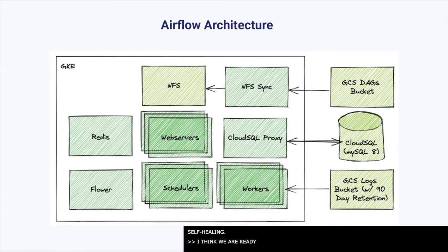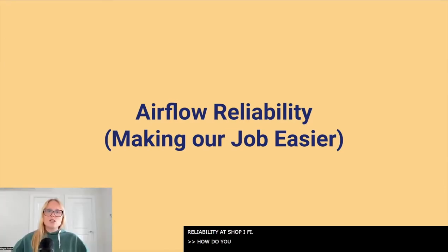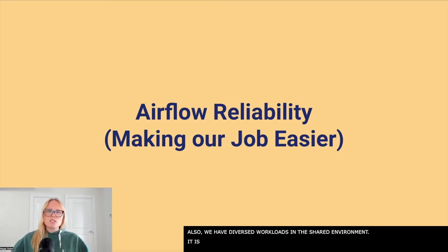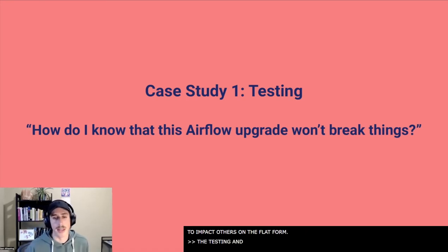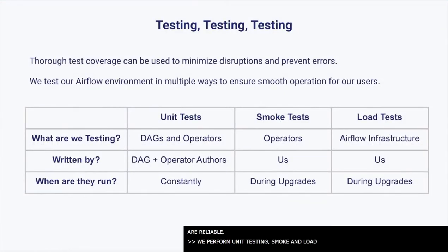Reliability is a top priority at Shopify because we run such a large number of DAGs in a single environment. We aim for three nines of uptime, which only allows for eight hours of downtime per year. It's important that we provide a stable environment through Airflow upgrades and handle high-throughput times. We can prepare for these scenarios with rigorous testing procedures. We have diverse workloads running in a shared environment, so it's important to enforce policies and safeguards. We perform three types of tests: unit testing, smoke testing, and load testing — each serving a different purpose to provide comprehensive coverage.